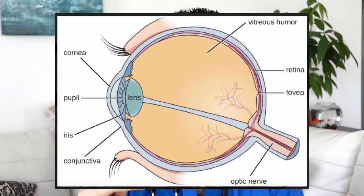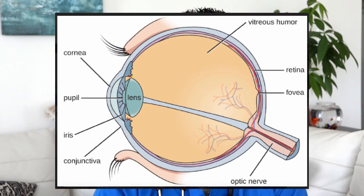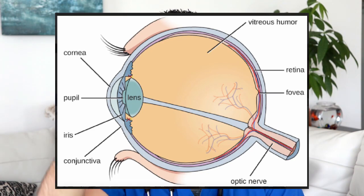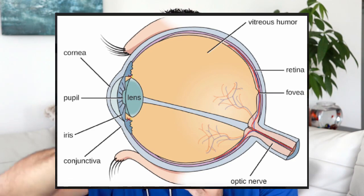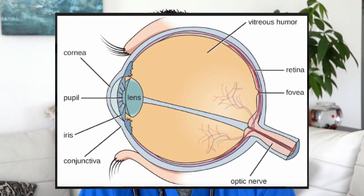To understand conjunctivitis, first you need to understand what is the conjunctiva. Specifically, your conjunctiva is a mucous membrane. It's a clear tissue structure that holds a lot of vessels and covers the surface of your eye, and actually goes deeper and covers the inner surface of your eyelids as well.